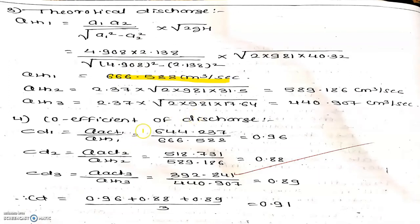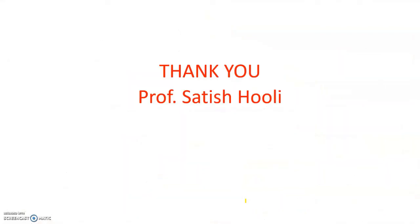Once you have Q_theoretical, you find CD = Q_actual / Q_theoretical. The first trial gives a CD value of 0.96. You repeat this for all trials, then take the average CD value. The calculation method is the same as for a venturimeter and orifice meter. This completes the calculation part of the nozzle meter.